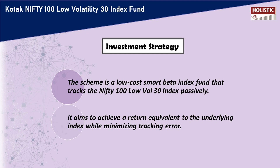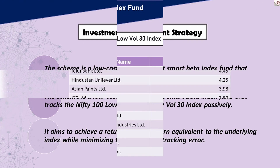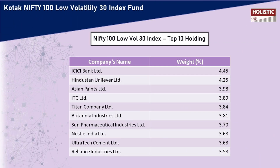To better understand the investment strategy, we need to look at the portfolio structure and top 10 holdings. The top 10 companies in this index are ICICI Bank Limited, Hindustan Unilever Limited, Asian Paints Limited, ITC Limited, Titan Company Limited, Britannia Industries Limited, Sun Pharmaceutical Industries Limited, Nestle India Limited, UltraTech Cement Limited, and Reliance Industries Limited.